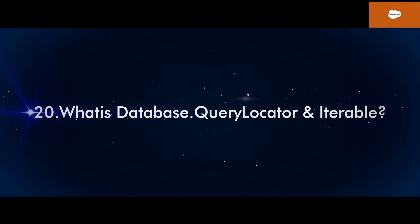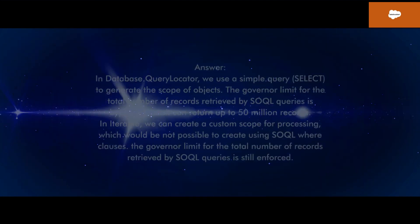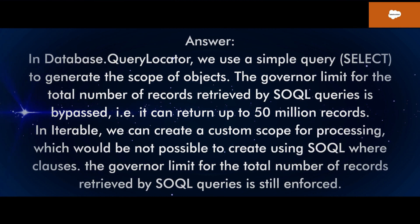Q20: What is the difference between Database.QueryLocator and Iterable? In Database.QueryLocator, we use a simple SOQL query to generate the scope of objects. The governor limit for the total number of records retrieved by SOQL queries is bypassed — it can return up to 50 million records. In Iterable, we can create a custom scope for processing which would not be possible to create using SOQL where clauses, but the governor limit for the total number of records retrieved by SOQL queries is still enforced. Thanks for watching Salesforce Astart.